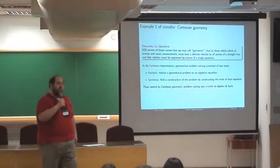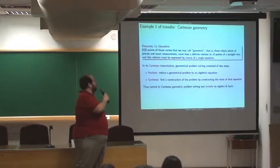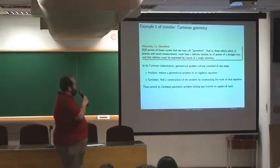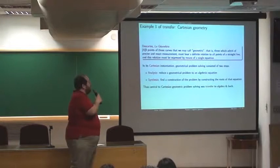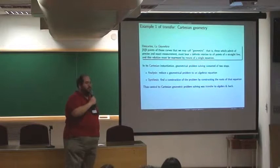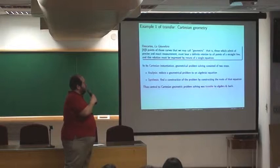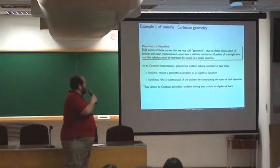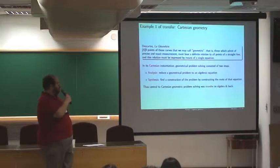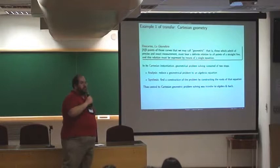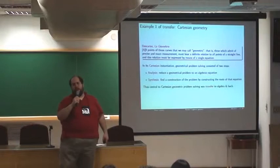So I want to begin with a few examples of this transfer so that we have an idea together about what the phenomena are. One classical example is, of course, analytic geometry in the style of Descartes. You all know this passage when Descartes writes that all points of those curves which we may call geometric, that is, those which admit of precise and exact measurement, must bear a definite relation to all points of a straight line. And this relation must be expressed by means of a single equation. And this gives birth then to the Cartesian method of problem solving. One begins with an analysis where we reduce a geometrical problem to an algebraic equation. And then ultimately finding a single equation, we geometrically construct the roots of that equation. So it's crucial then to this problem solving procedure that there is transfer, firstly from geometry to algebra and then back from algebra to geometry.